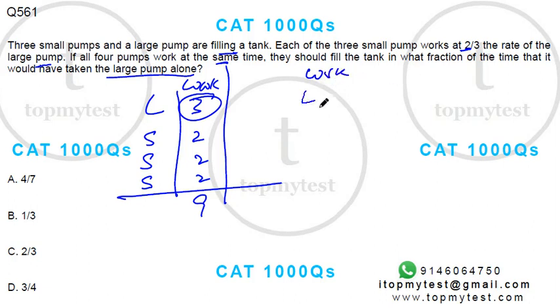So in terms of work, large to all these four pumps will be three is to nine, which is one is to three. So in terms of time, right, large to these four pumps will be inverse of this, three is to one.